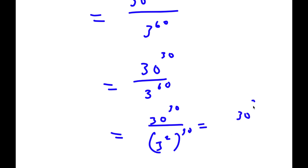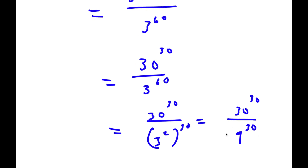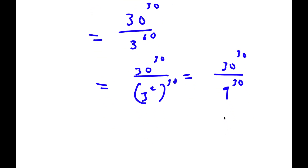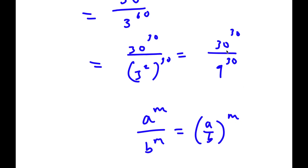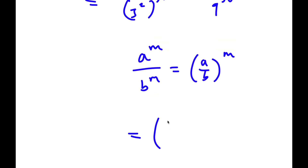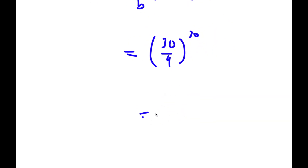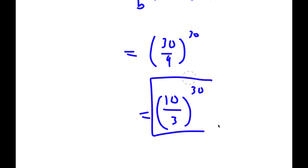Now if I have something in the form a to the power of m over b to the power of m, this is equal to a over b to the power of m. So this is equal to 30 over 9 to the power of 30, which is equal to 10 over 3 to the power of 30. So this is my answer.